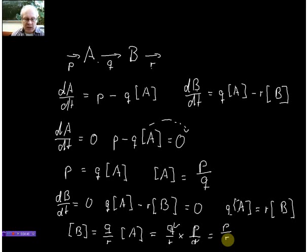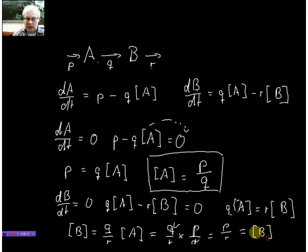So taken together from this pathway here, a simple linear unbranched pathway, I can very easily calculate the steady state concentration for A. So A would be p over q from the rate constants and B concentration is p over r.